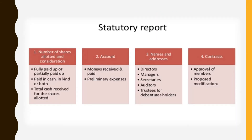Next is the statutory report. The statutory report contains the following items: first, number of shares allotted and consideration — the total number of shares allotted distinguishing as fully paid up or partly paid up, paid in cash, in kind, or both, and total cash received for shares allotted. Second, accounts — monies received and paid are reported, and preliminary expenses are also reported. Third, names and addresses — the names and addresses of directors, managers, secretaries, auditors, and trustees for debenture holders are recorded. Fourth, contracts — the contracts for approval of members and proposed modifications are also included in the statutory report.